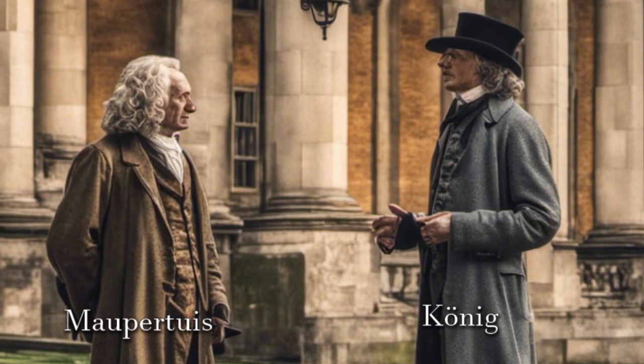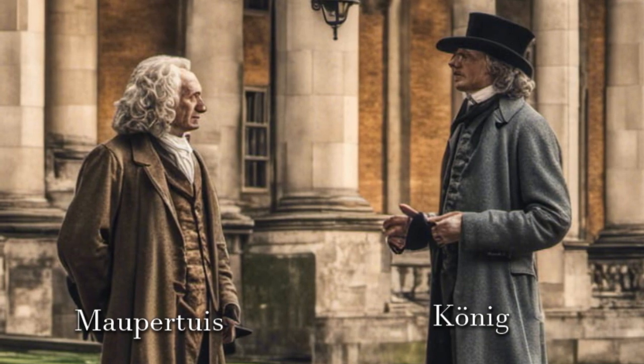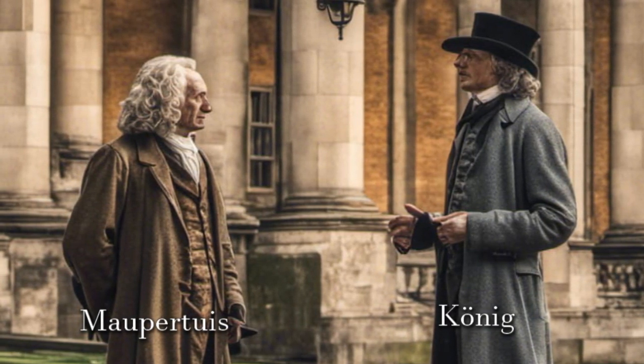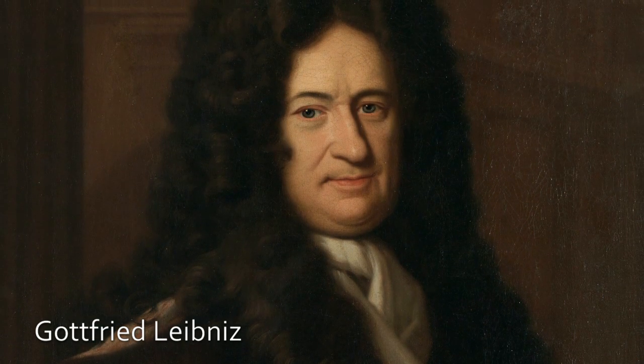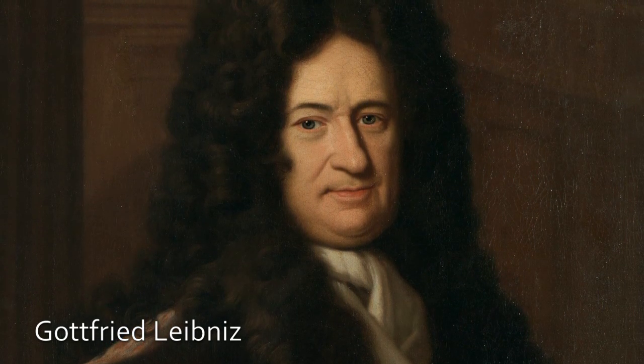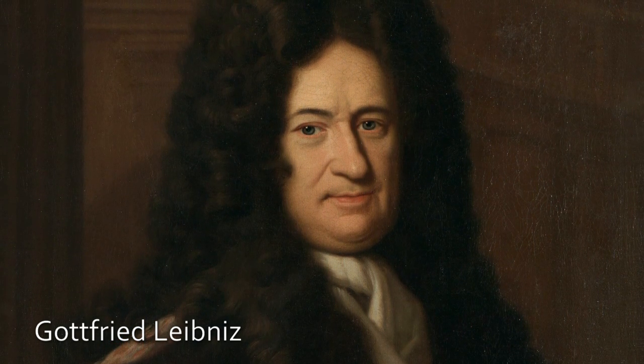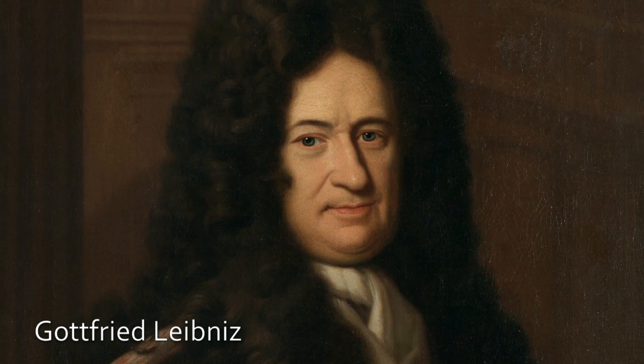In 1751, there arose a dispute over Maupertuis authority with the mathematician Samuel Koenig, asserting that the principle had been originally conceived by Gottfried Leibniz in 1707. While the arguments presented by Koenig resembled some of Leibniz's idea, there were no documented references to the principle in Leibniz's known work.